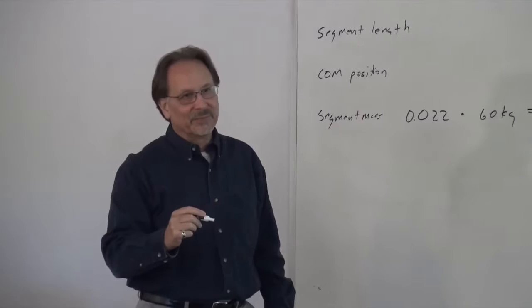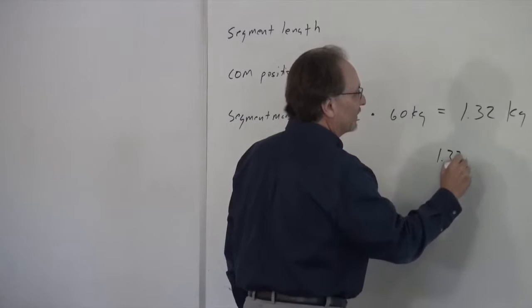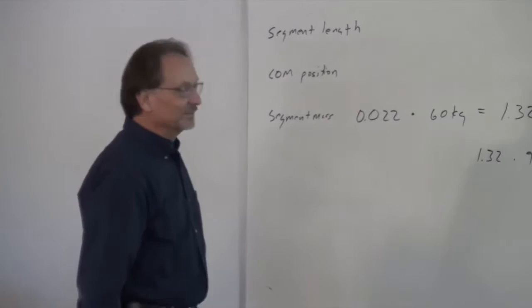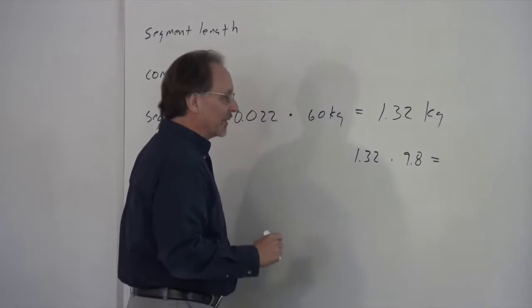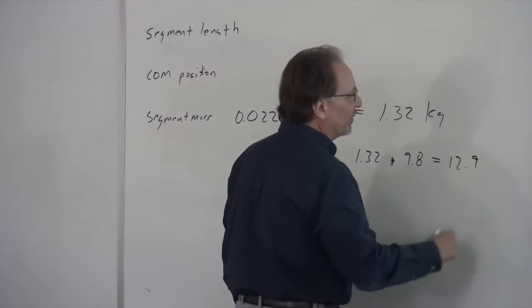So, the mass was 60 kilograms. For the forearm and hand, defined from the elbow axis to the ulnar styloid, as a proportion of body weight it's 0.022. So the segment mass is 0.022 times 60 kilograms, which is 1.32 kilograms. And if we want to convert it to force or weight, it's 1.32 times 9.8, which is 12.936 newtons — that's the gravitational acceleration, one g.